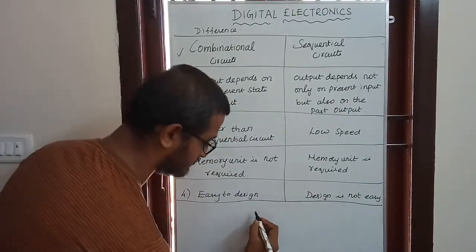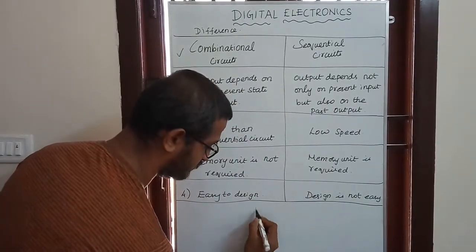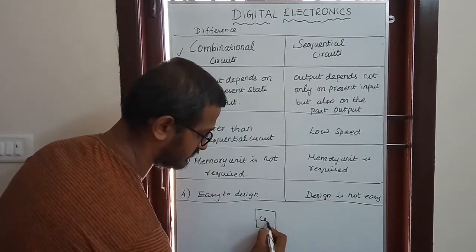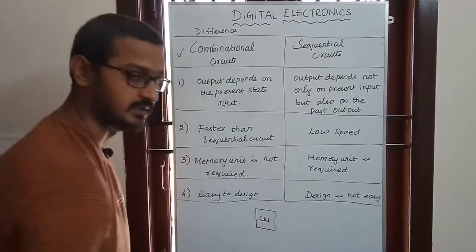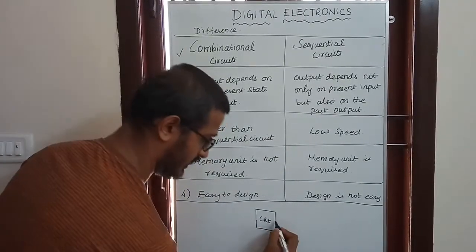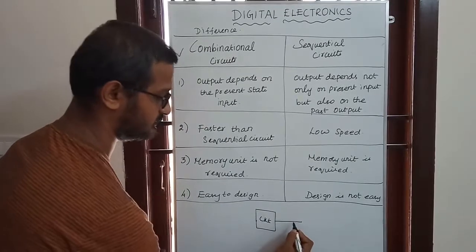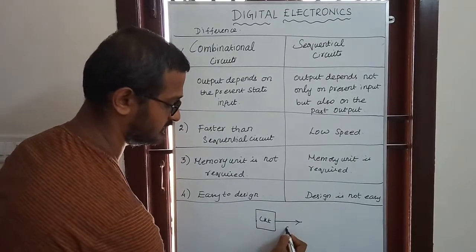Let's look at a diagram as an example. Looking at the circuit, we can identify the output. The output here is determined by the present input.